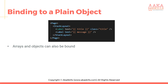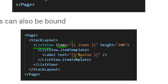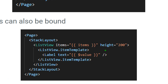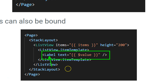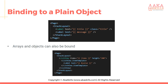Complex objects can also be bound. For example, a person object with first name, last name, age, and an address object with city, country, postcode, etc. In the view, we have a page with a StackLayout containing a ListView. Its items are bound to an items collection — some Observable in C#. We set the height and define a template using ListView.itemTemplate, displaying a label with text set to $value, which refers to each item's property in the items collection.